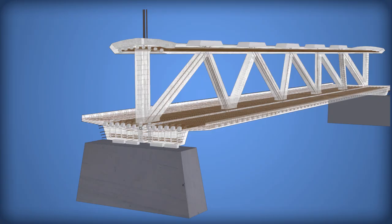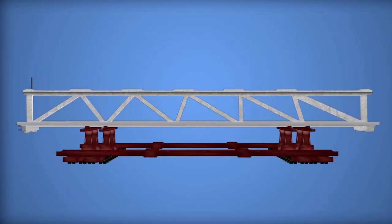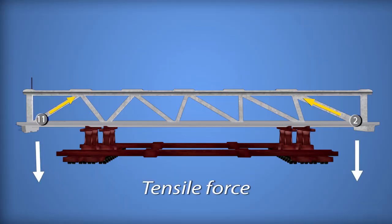The post-tensioning rods and steel reinforcing bars were to carry the tension loads of the completed bridge. Before the bridge was moved onto the piers, truss members 2 and 11 were post-tensioned in the construction yard to counteract the tensile forces developed while the ends of the bridge hung over the transporters when the span was moved.